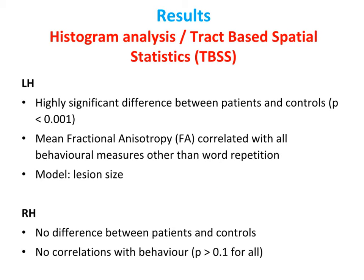Using histogram analysis and tract-based spatial statistics, or TBSS, we found that there was a highly significant difference between patients and controls in white matter integrity of the left hemisphere, both inside and outside the lesion. We also saw that patients' performance on most of the language tasks correlated with FA. However, when looking at various predictors for left hemisphere FA — both when including and excluding the lesioned area — we saw that the lesion size was a significant predictor over and above other variables. In contrast, in the right hemisphere, we did not see any differences between patients and controls, and we found no correlation between patients' language performance and white matter integrity measures.